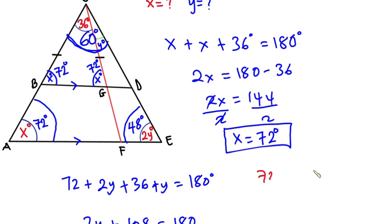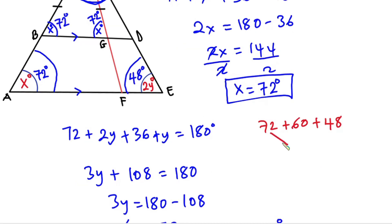Now let's go ahead and sum the three angles to see whether it is up to 180. So we have 72 plus 60 plus 48. 72 plus 60 is 132, then 132 plus 48 is equal to 180.